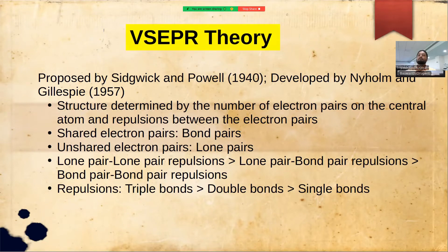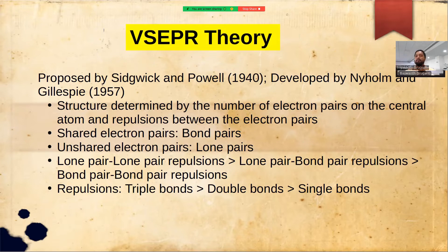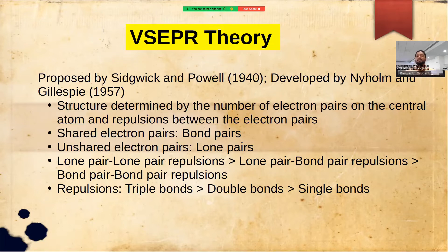We can have two different types of electron pairs. The electron pairs that are shared with other atoms are called bond pairs, and electron pairs that are localized on a particular atom are called lone pairs. In general, repulsions between two lone pairs are very strong compared to lone pair and bond pair repulsions, which in turn are stronger than bond pair–bond pair repulsions. Also, if we have multiple bonds like triple bonds, the repulsions are stronger compared to double bonds, which have stronger repulsions than single bonds.